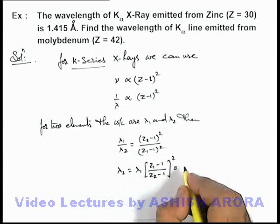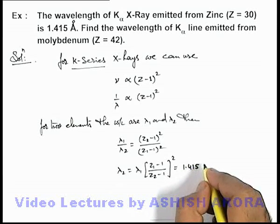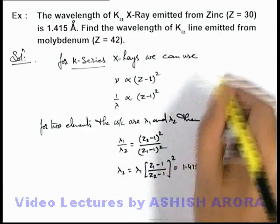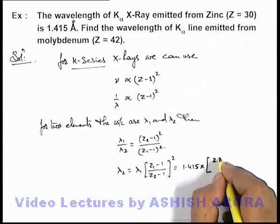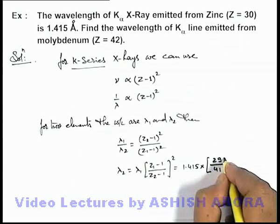If we substitute the values, the value of lambda 1 we are given with 1.415 angstrom, so this multiplied with Z1 minus 1, so it'll be 30 minus 1, 29, divided by 42 minus 1, this is 41, square.